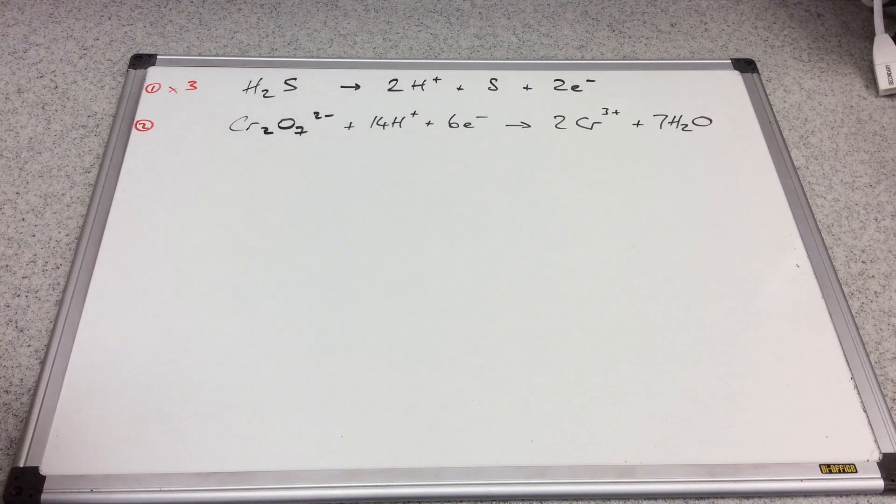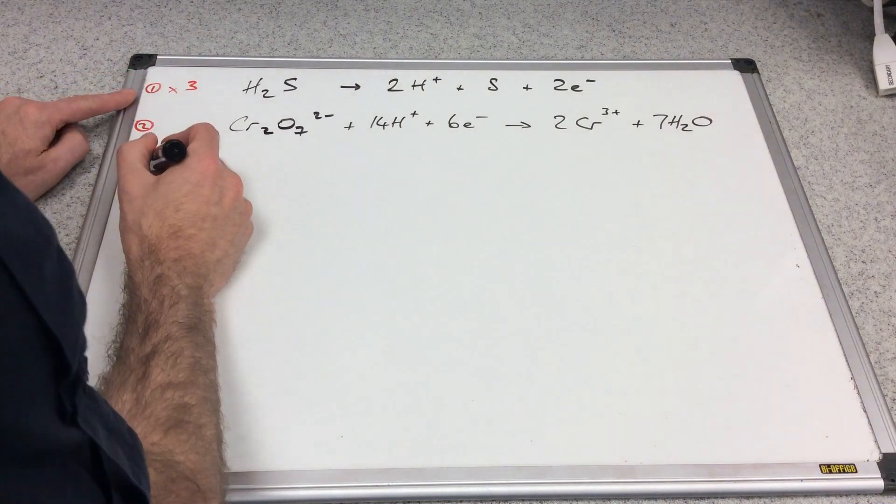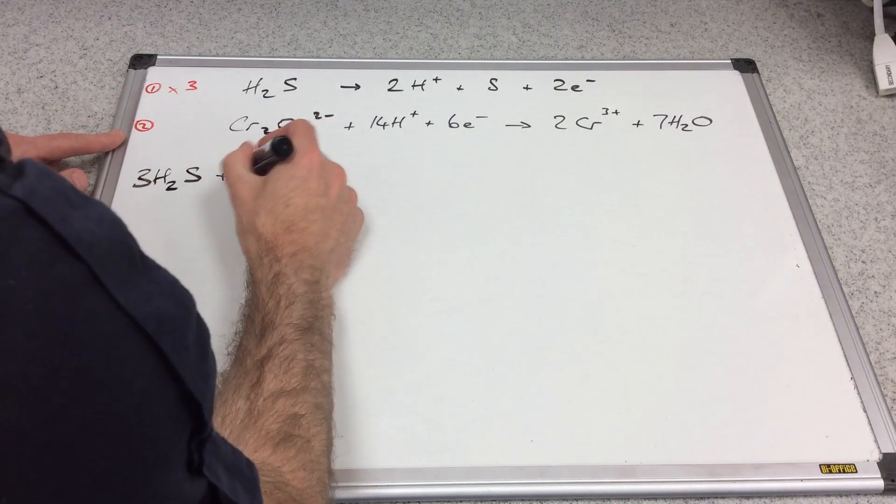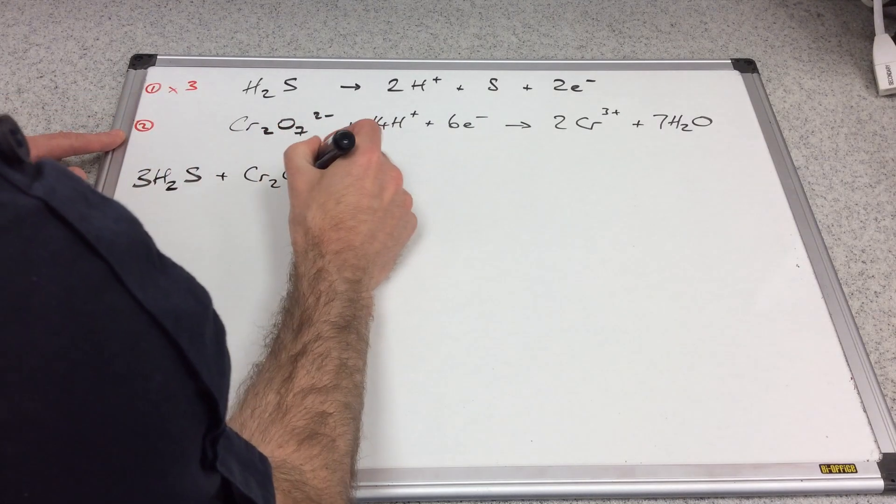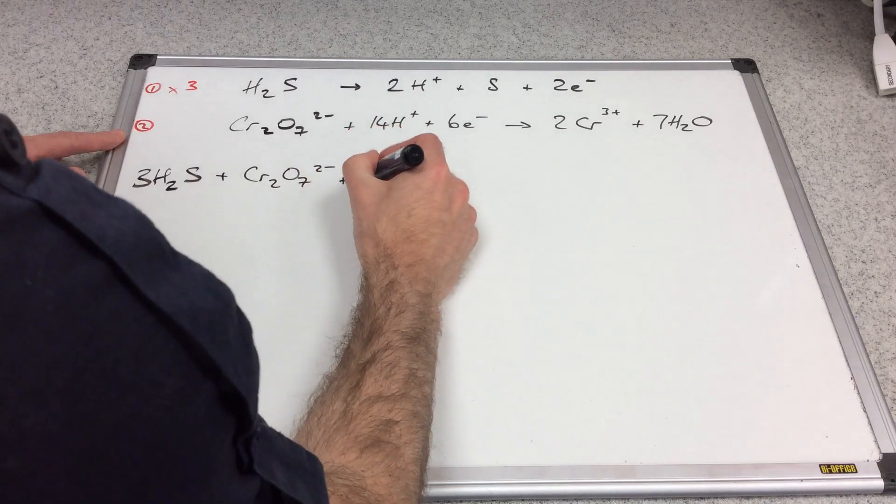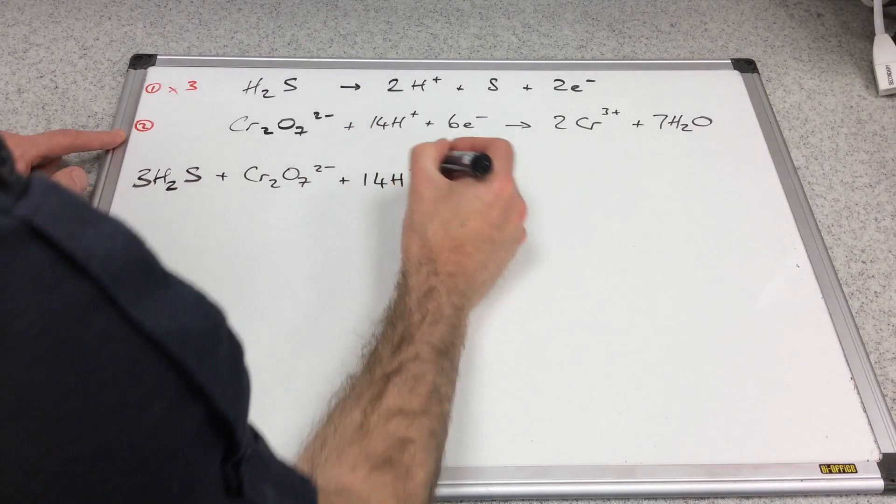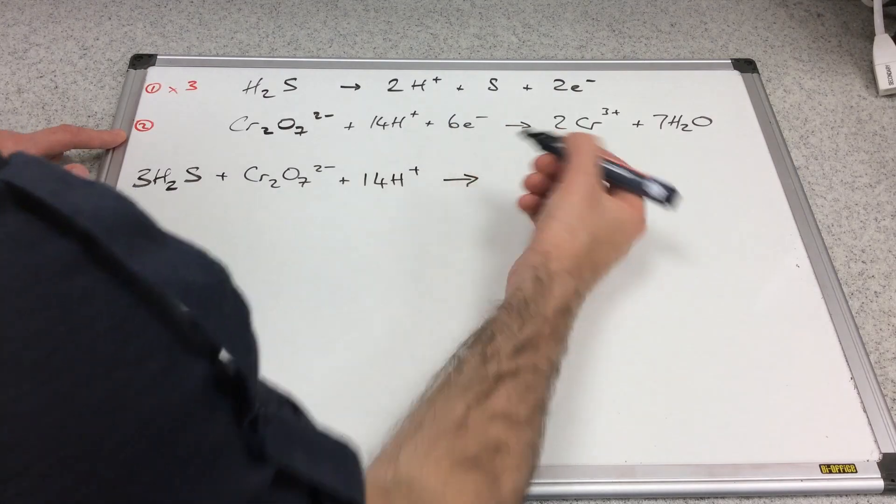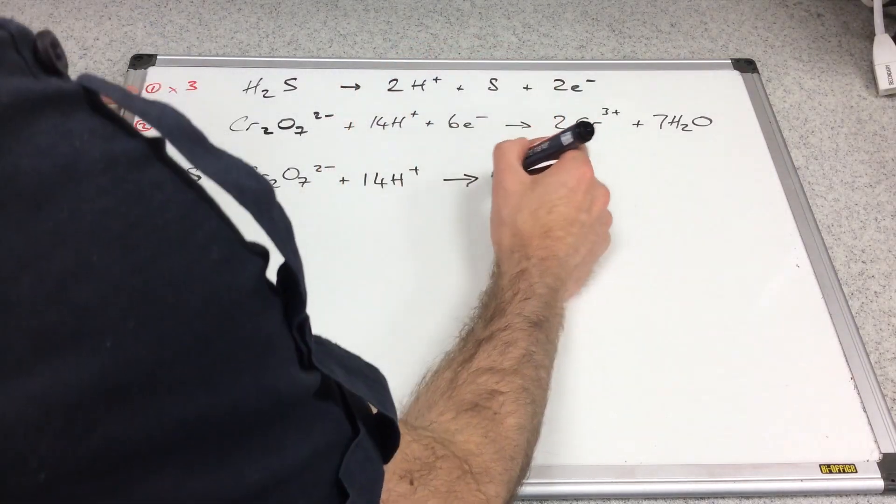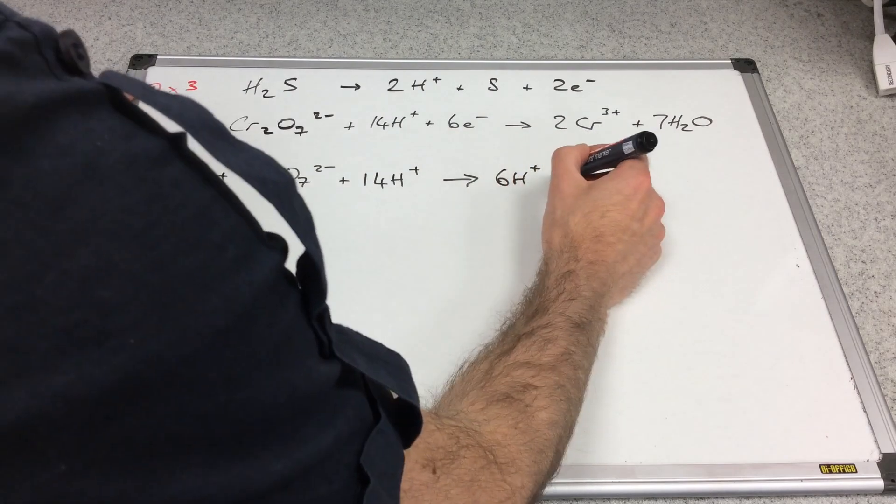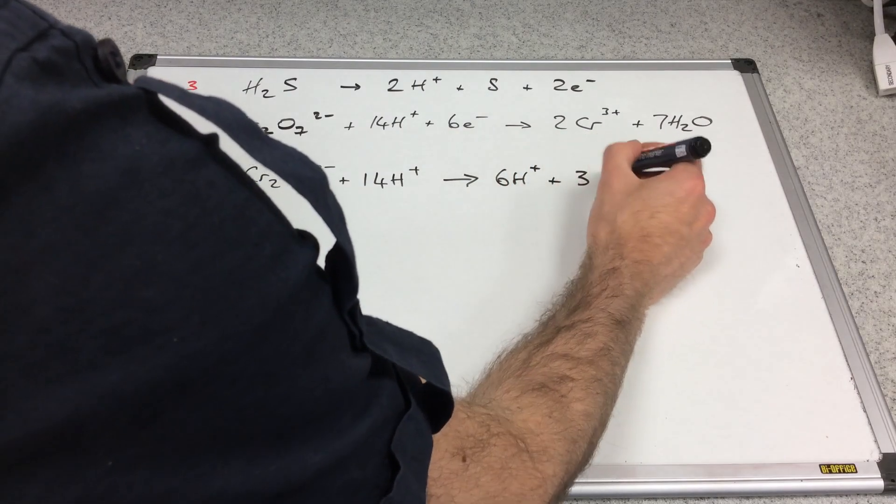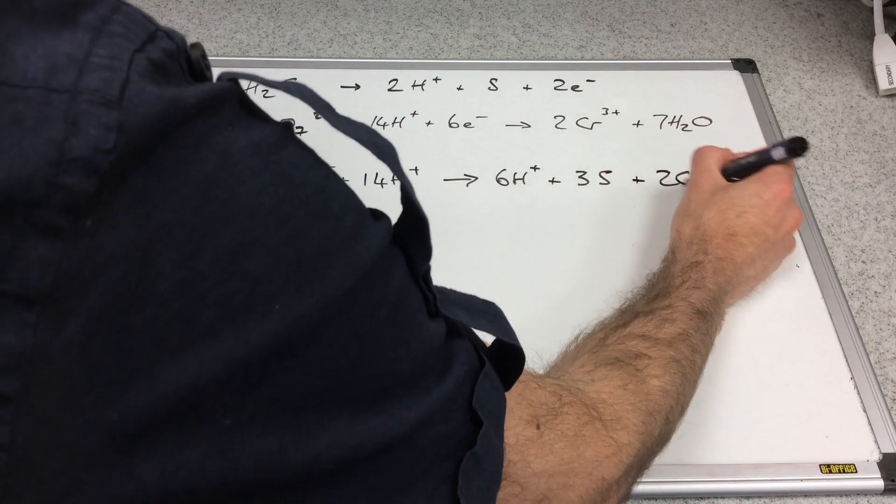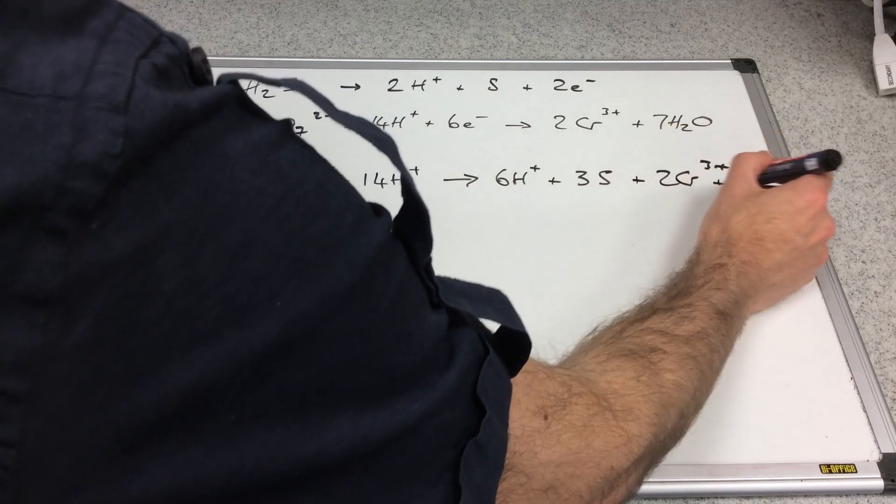When we add that together, we're going to get 3H2S + Cr2O7²⁻ + 14H+. I won't bother putting the electrons in - you know they're going to cancel. On the right we've got 6H+ + 3S + 2Cr³⁺ + 7H2O.